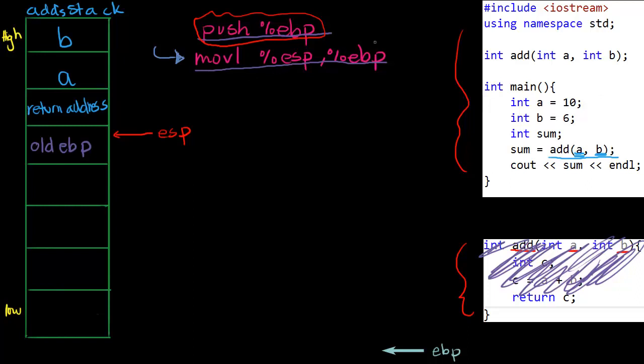That's what it's saying. It's saying move the value that ESP is pointing to into EBP, or in other words, simpler words, make EBP point to the same thing that ESP is pointing to.